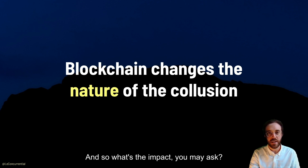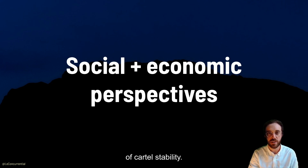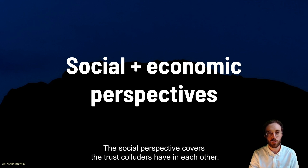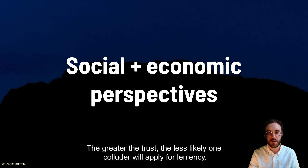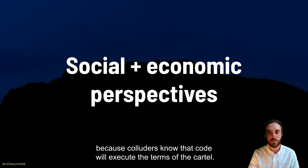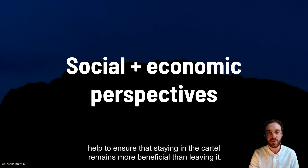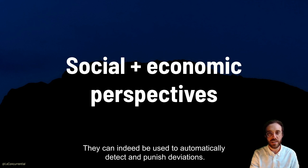So what's the impact, you may ask? Well, smart contracts help both the social and the economic perspective of cartel stability. The social perspective covers the trust colluders have in each other. The greater the trust, the less likely one colluder will apply for leniency. Smart contracts help in this regard, because colluders know that code will execute the terms of the cartel.